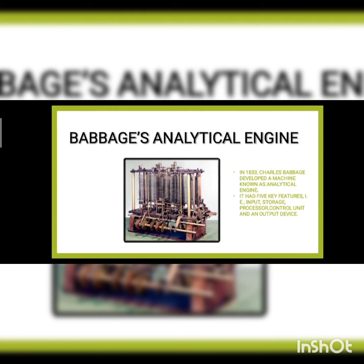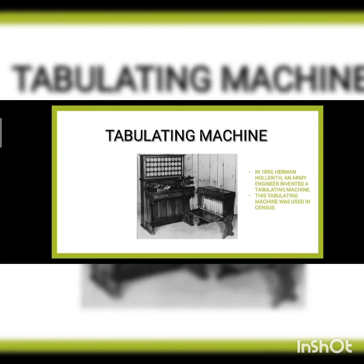Our next calculating device is the Tabulating Machine. In 1819, Herman Hollerith, an American inventor, invented a tabulating machine. This tabulating machine was used in census operations to compute the population of the USA, giving a quick count of the US population. The use of the tabulating machine was so successful that the company later became the famous International Business Machine, known as IBM.